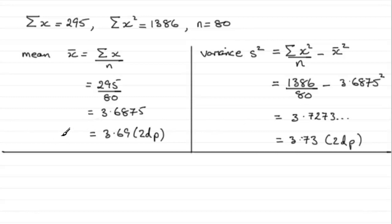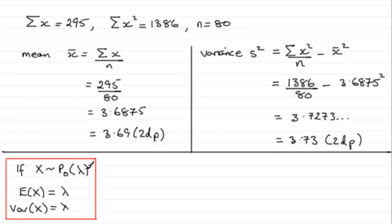Well, we should be familiar with the fact that if you have a Poisson model, if X is distributed as a Poisson with mean lambda, E of X equals lambda. Remember, E of X is the mean, and variance of X also equals lambda.